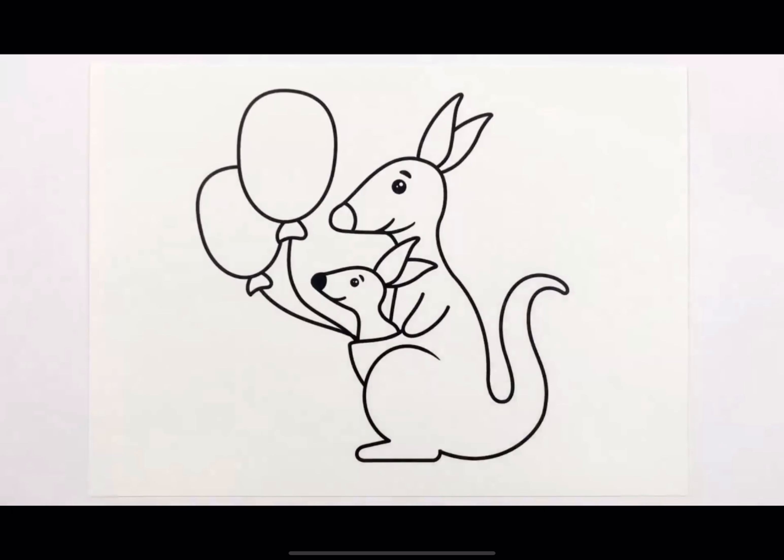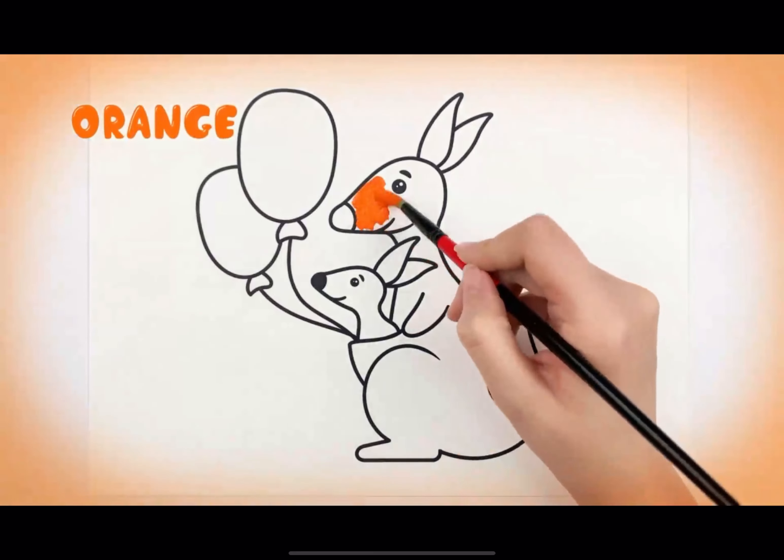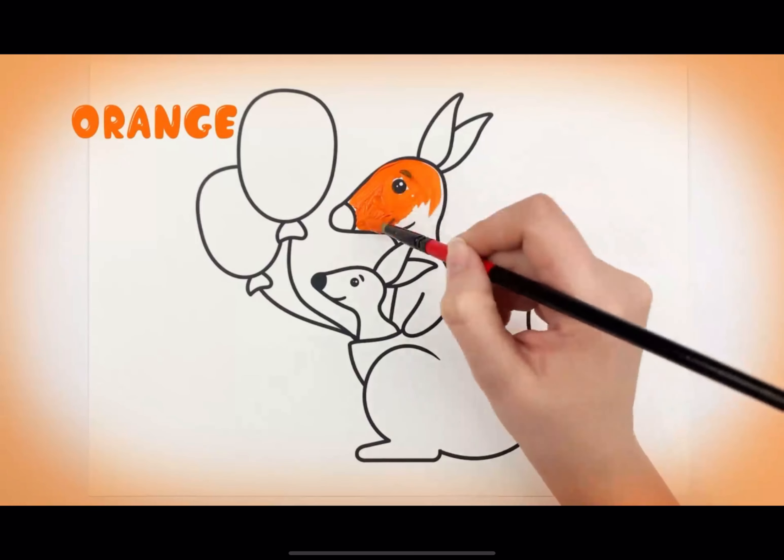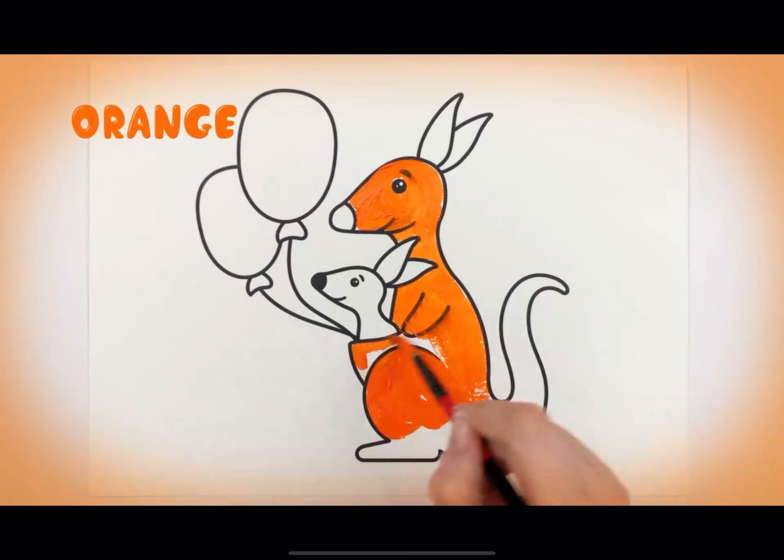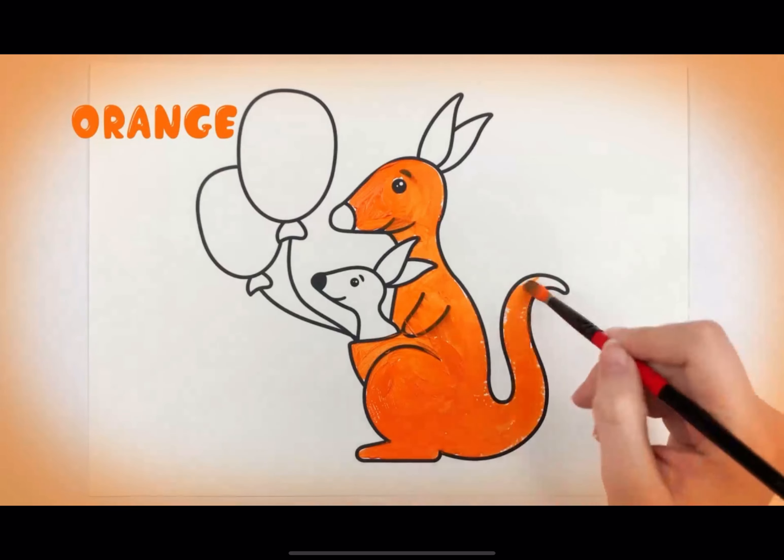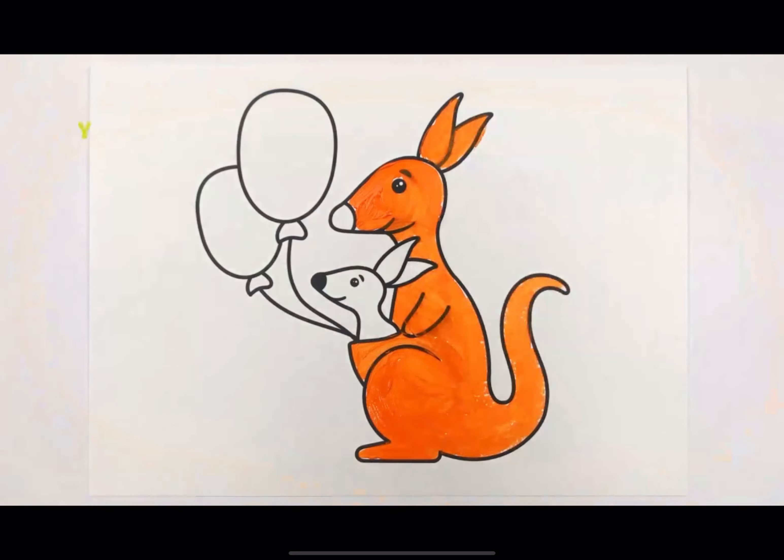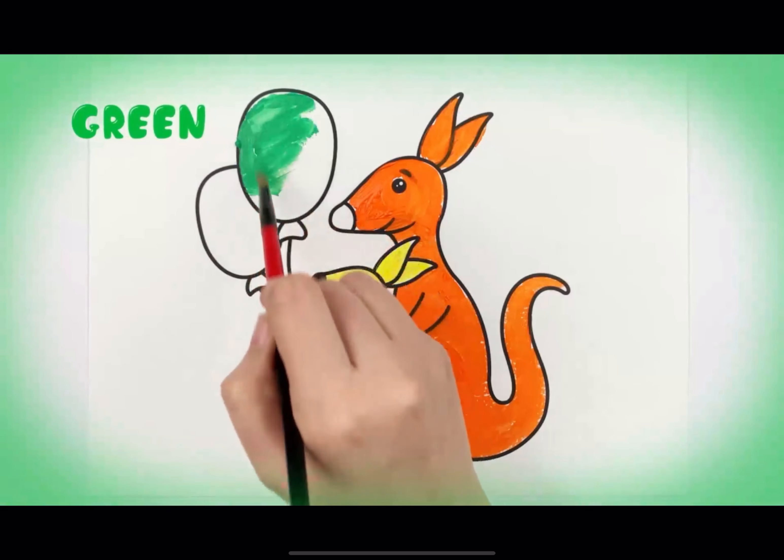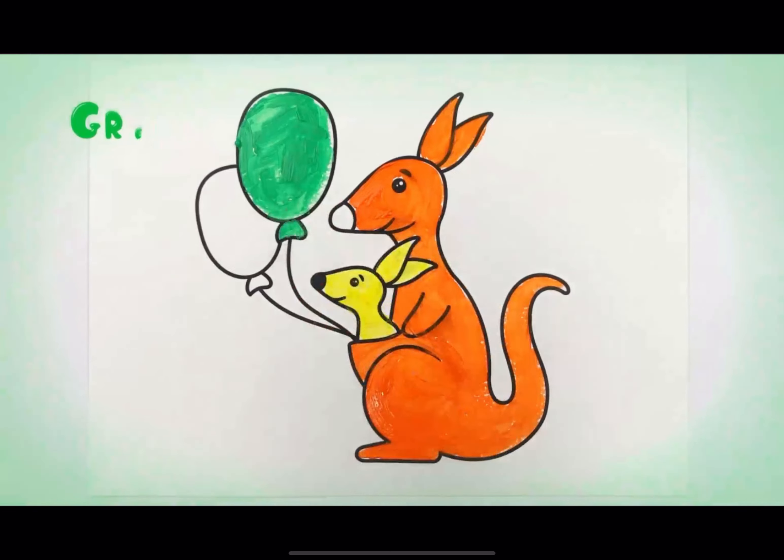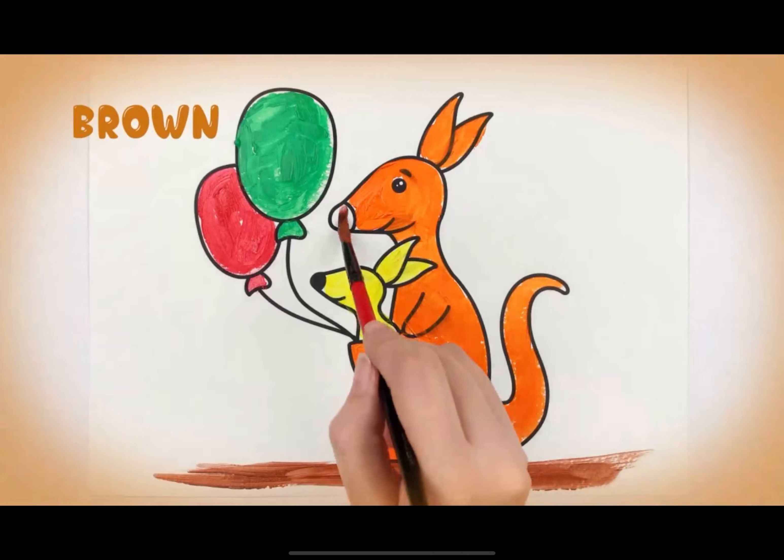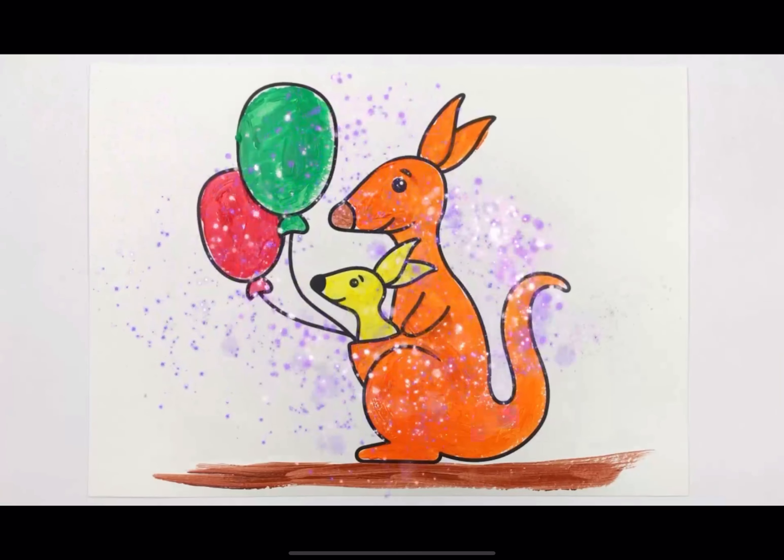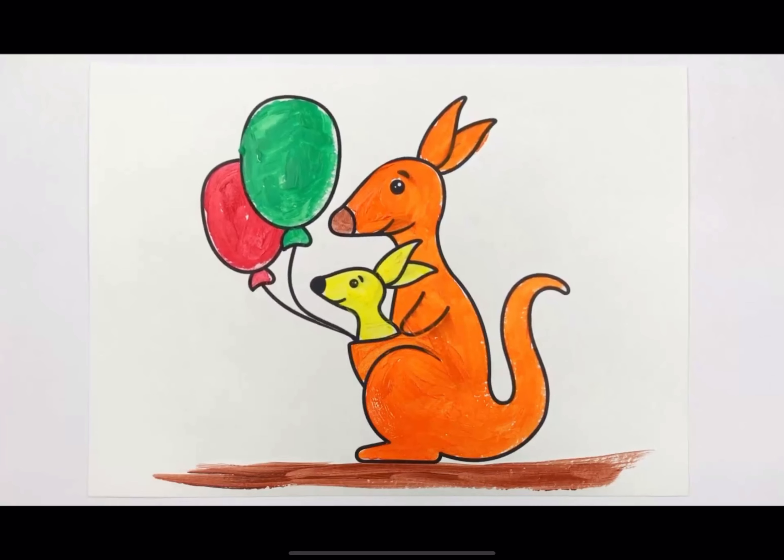Let's learn to color the kangaroo. Orange, yellow, green, red, brown, orange and yellow. Looks pretty.